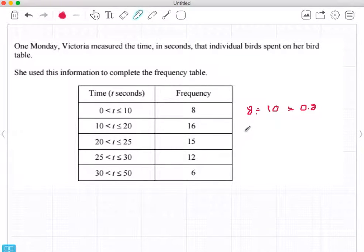So this one is 16, that's the frequency, and I'm going to divide it by the width of the class, which is 10, to get 1.6. So it's twice the size, twice the height of the previous one.